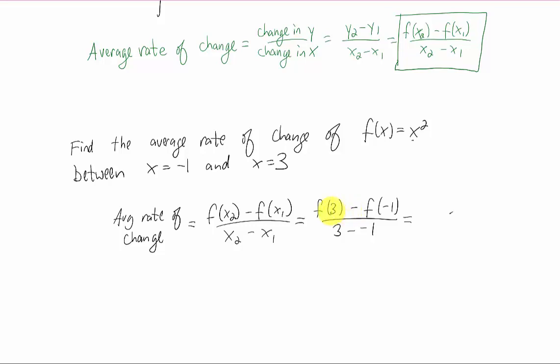Now all we have to do is simplify. What is f of three? Well, if you plug three into this function, you get three squared, which is nine. If you plug negative one into this function, you get negative one squared, which is positive one. And three minus negative one can be written three plus one. Simplify, and you get eight over four, or an average rate of change of two.